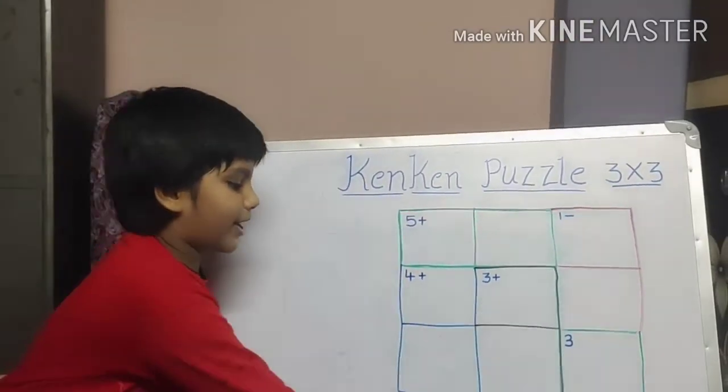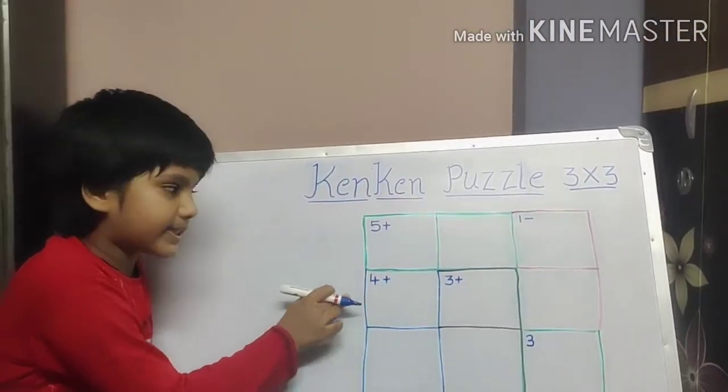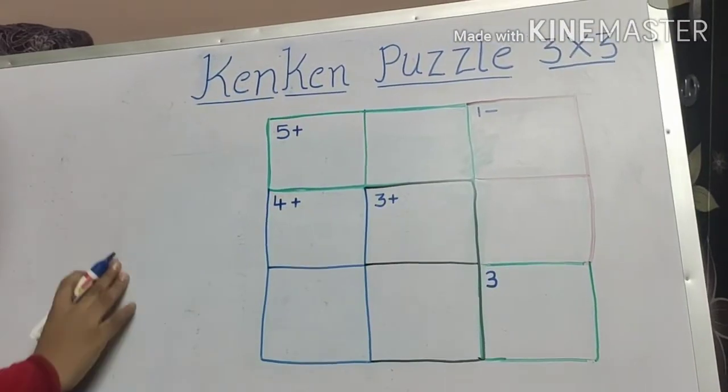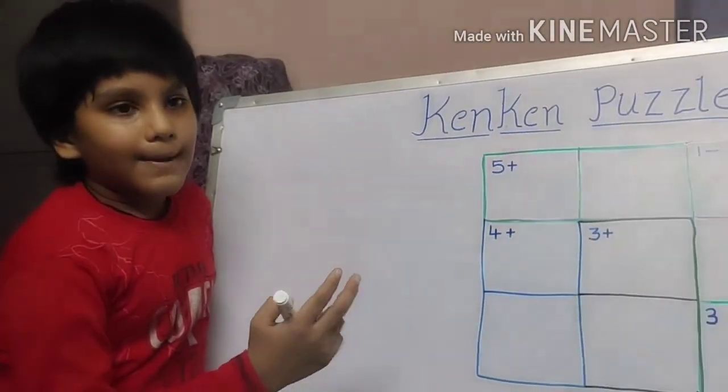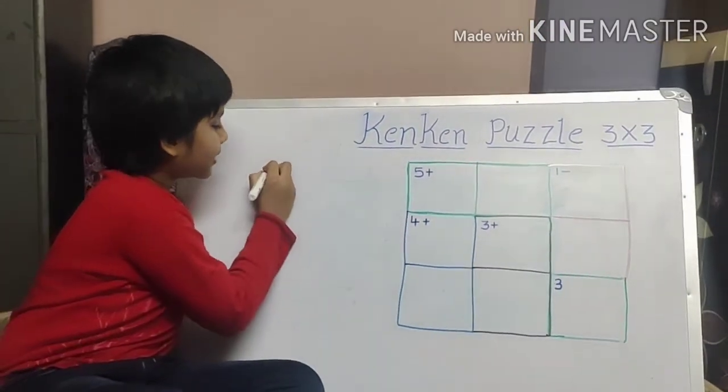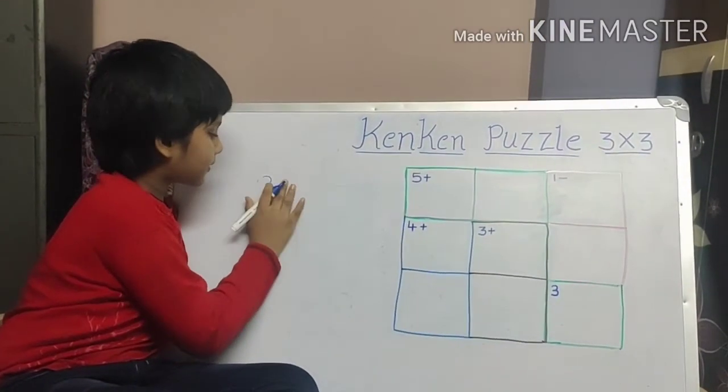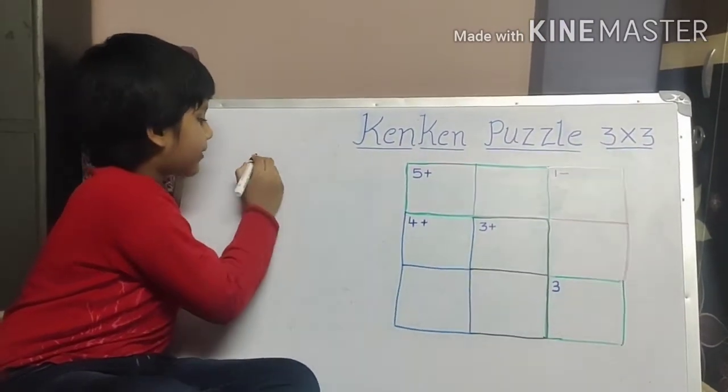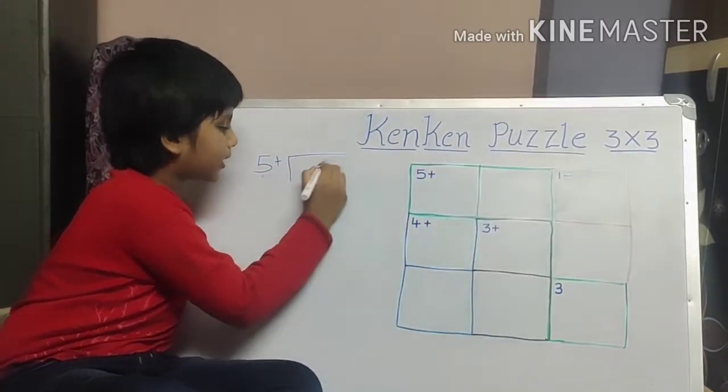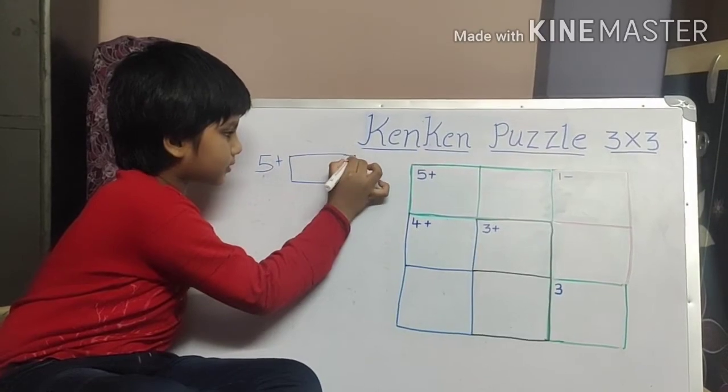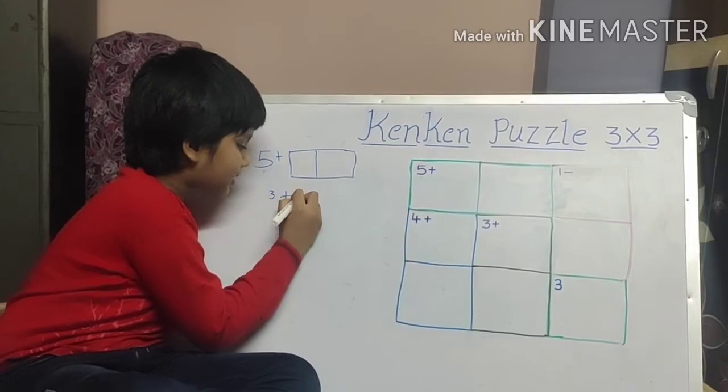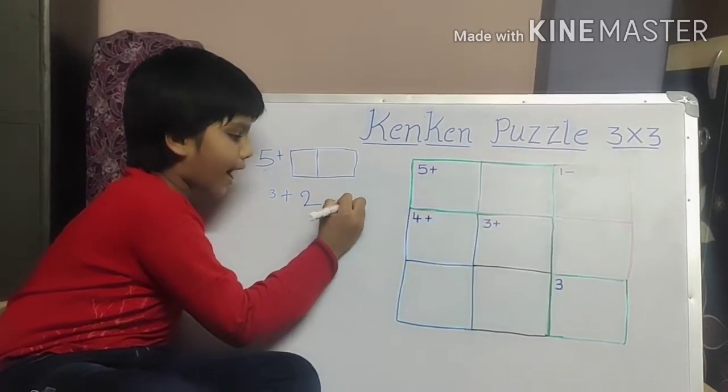First we have to take one KenKen puzzle, three by three. I have to take this. Five plus means we have to plus the two numbers. Five plus. They have given two boxes like this. Three plus two is equal to five.